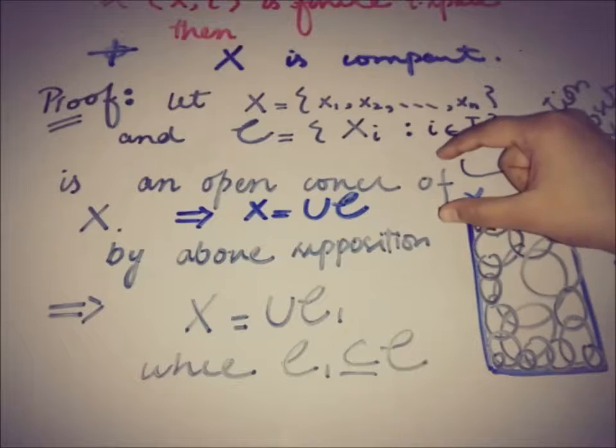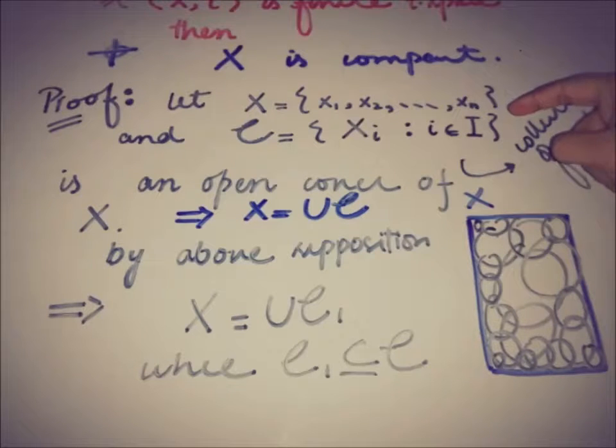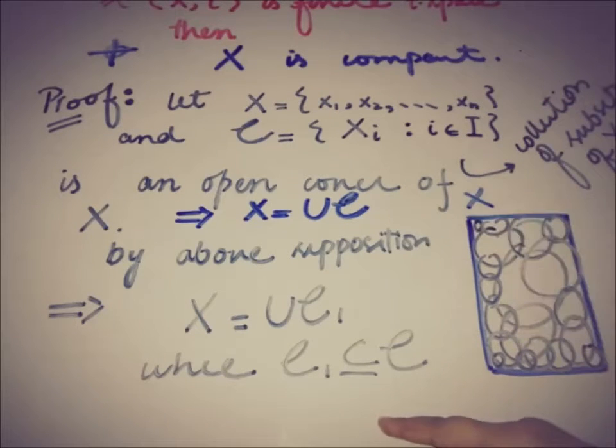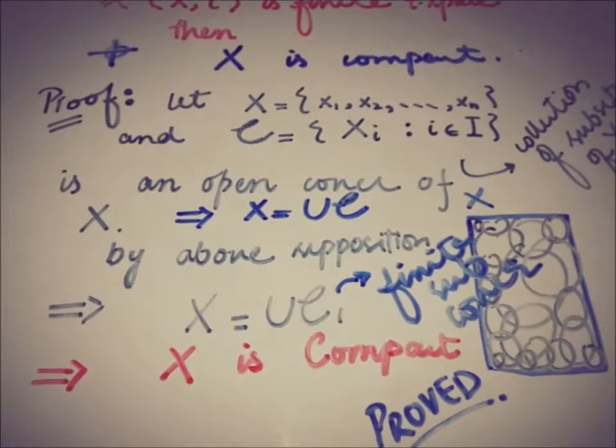So by taking any open cover of that set x, we have this C1 in the end eventually. That is why this is a finite sub-collection of that open cover. And this is what the definition of compactness: every open cover has a finite sub-cover. This whole thing implies that x is compact. We have proved that if any topological space is finite, then that topological space must be a compact space.